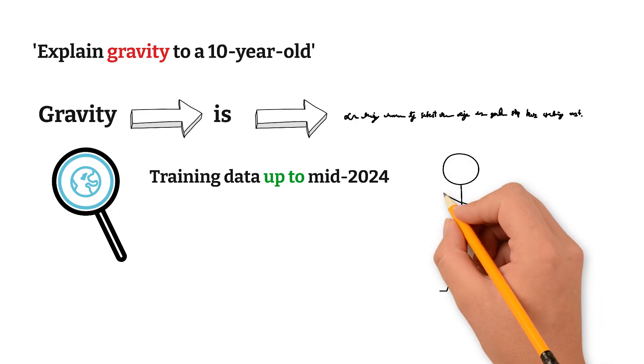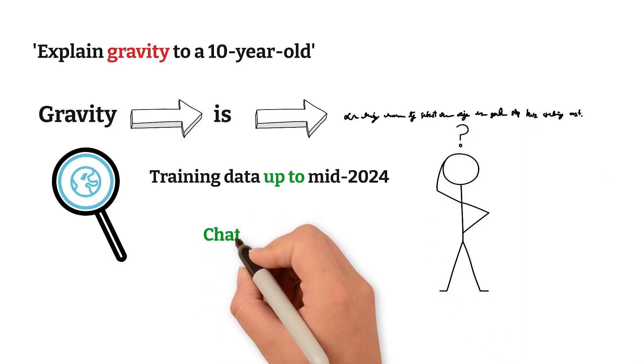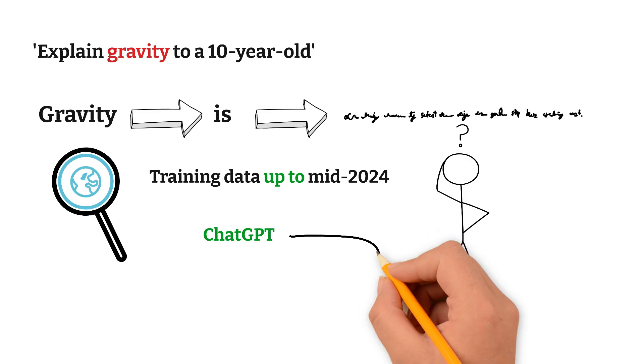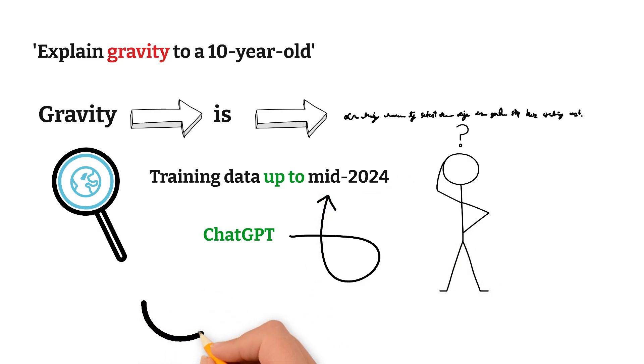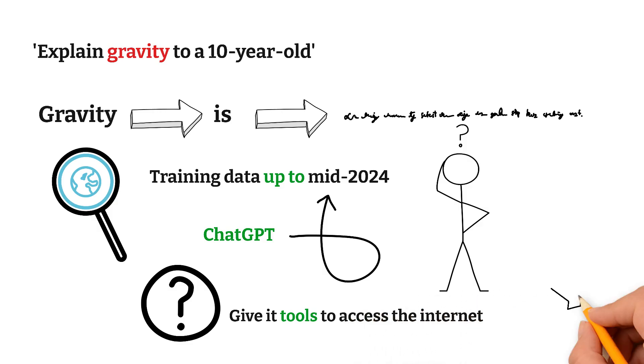Why only up to 2024? OpenAI, like ChatGPT, has data uploaded until mid-2024. And if you want updated data or real-time data, you need to give it tools to access the internet or even use a paid version of it.